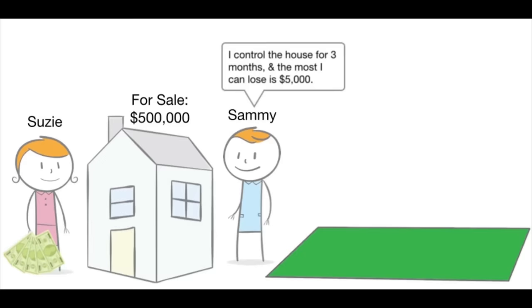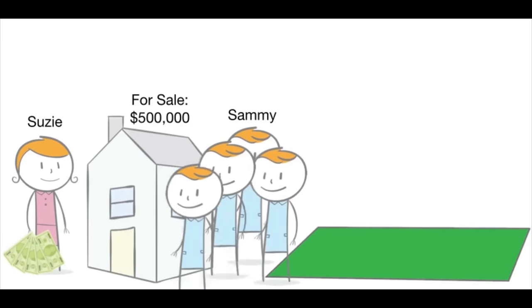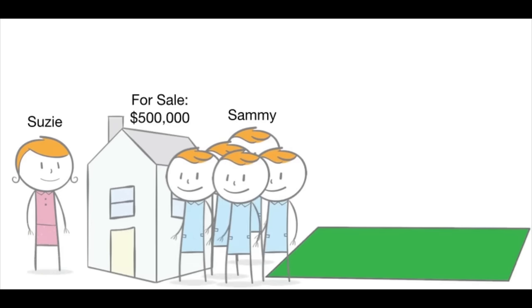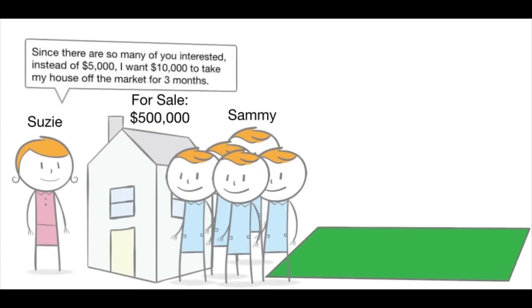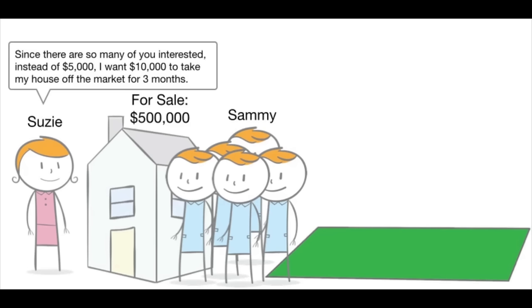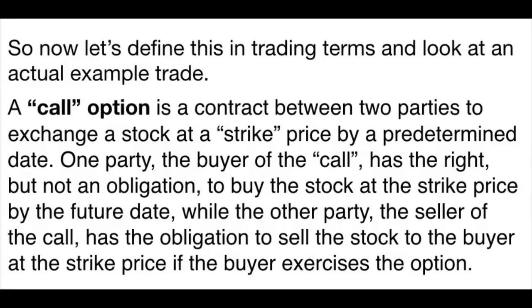Here's a footnote to the story: depending on the circumstances, if Susie felt she was likely to attract another buyer in the near term, she would have demanded more than $5,000 from Sammy to take the house off the market for three months. Likewise with call options — the more the underlying asset is perceived to appreciate, the higher the premium demanded by the market for that call option.